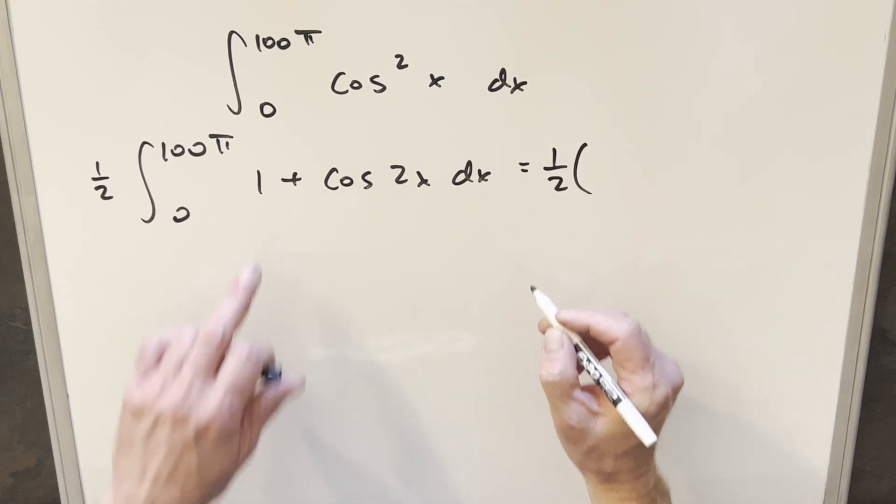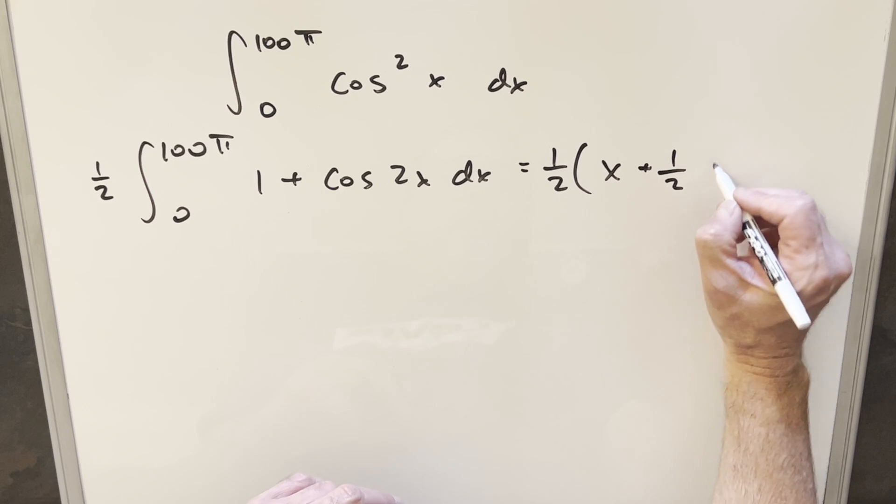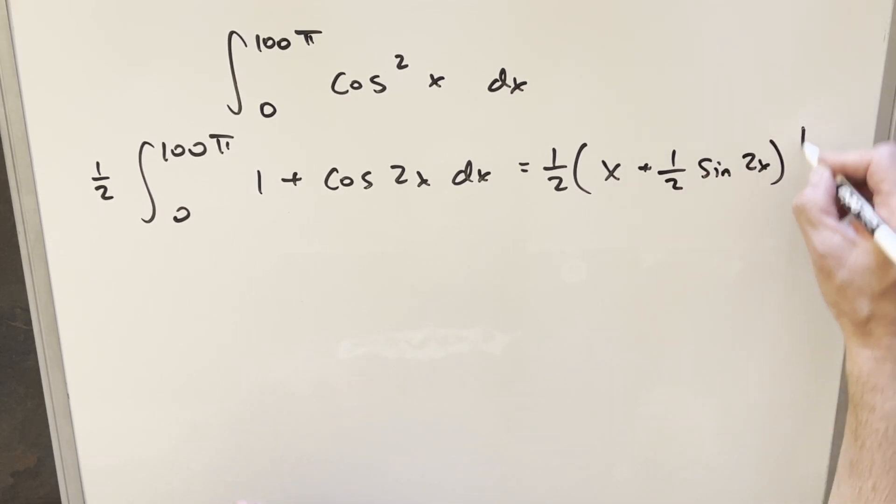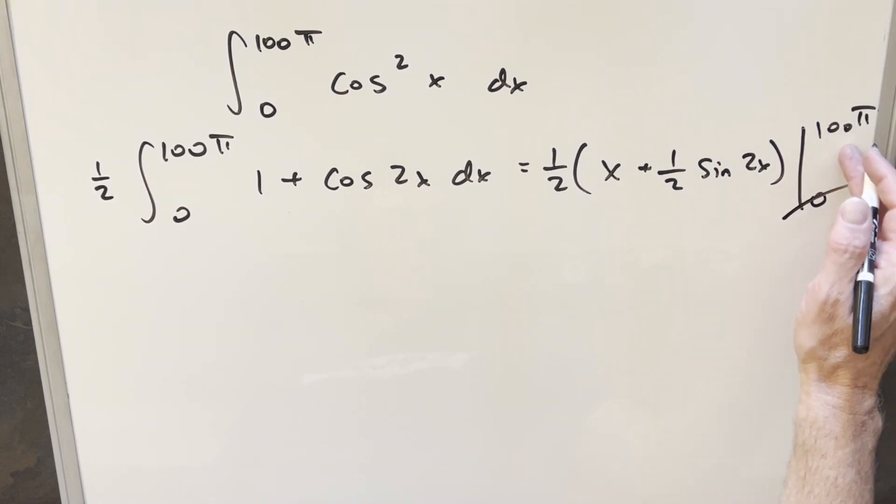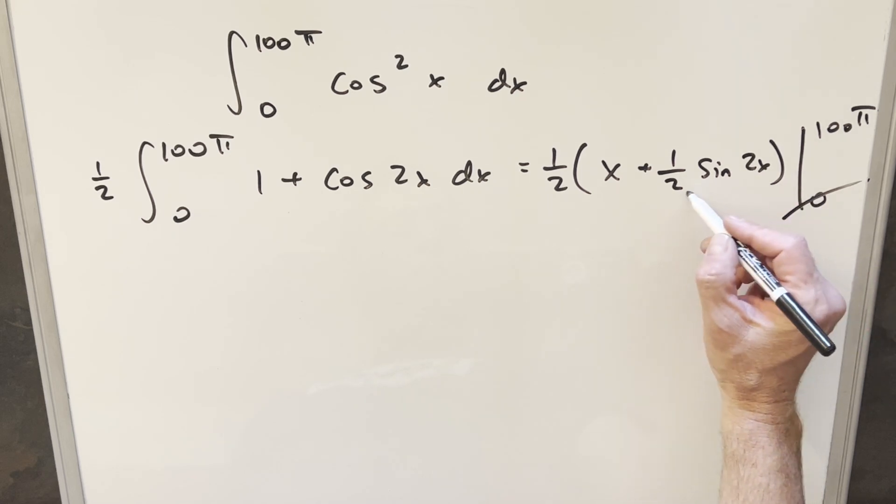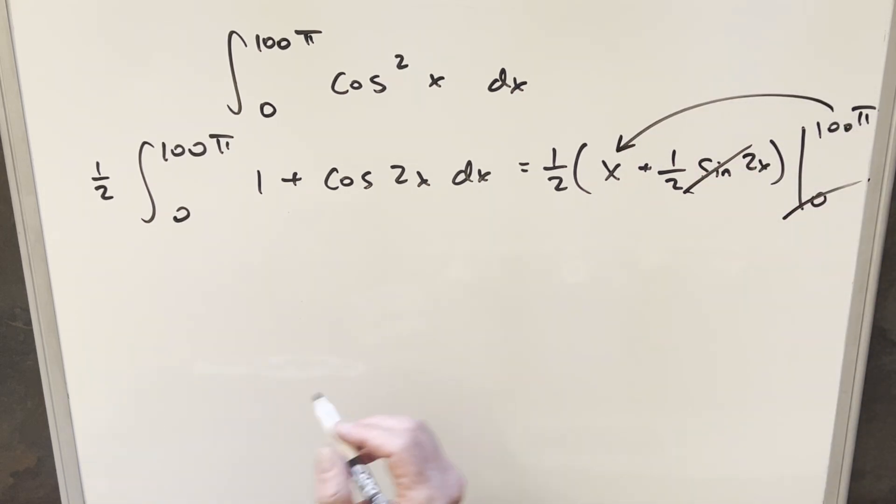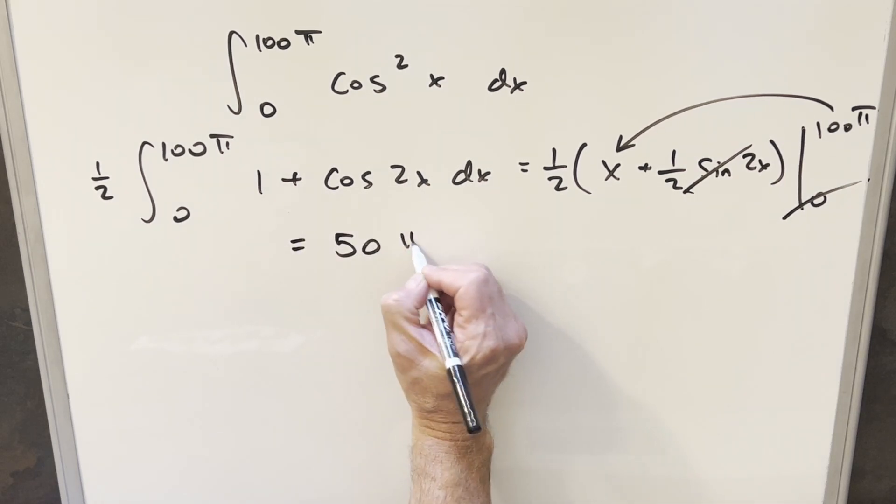And then we can just go ahead and integrate this. We're going to have one half in front. This is going to be an x. This is going to be one half sine 2x. And we just need to evaluate from zero to 100π. Now the zero value in this is going to be nothing. So we're not going to worry about that. Also, when you plug in 100π in here, this is also going to zero. So we just need to plug in 100π for x. And so our solution for this is just going to be 50π.